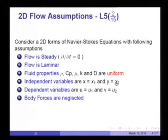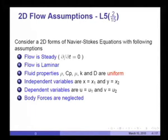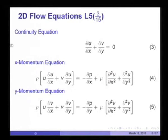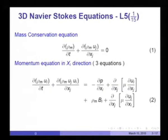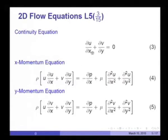Since we are dealing with two dimensions, instead of writing x1, x2, I shall write x and y, where x = x1 and y = x2. The dependent variables change to u = u1 and v = u2, and body forces are presently to be ignored. With these assumptions, the mass conservation equation reduces to du/dx + dv/dy = 0, since density is constant.